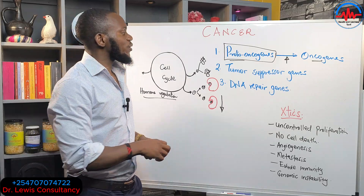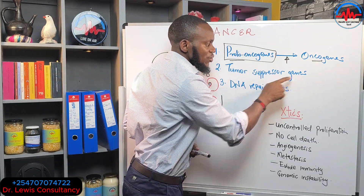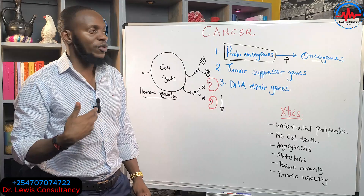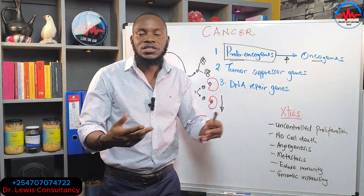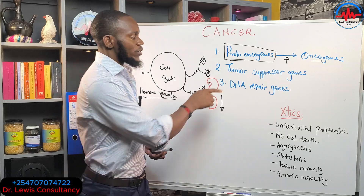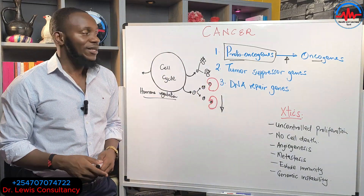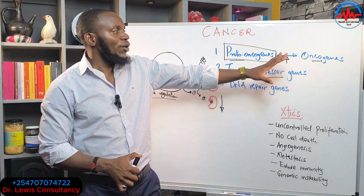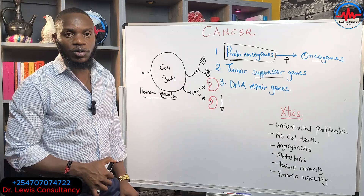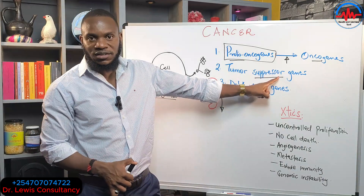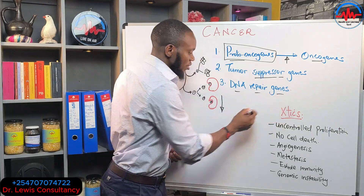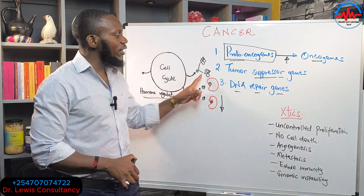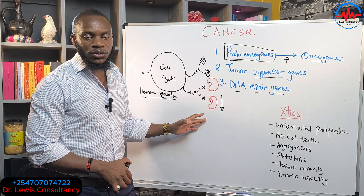Number two: in your system you have tumor suppressor genes. Those genes are very important. You've already activated the formation of oncogenes and the system is being overwhelmed. The tumor suppressor genes — underline the word suppressor — their role is to suppress any oncogenes and any cells that are mutating and causing problems. Their role is to suppress cancer cells. Number three: the DNA repair genes — from the name, you already know these repair the mutations causing abnormal cells to leave the cell cycle and spread.